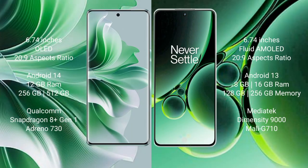Oppo Reno 11 Pro comes with a 6.74-inch OLED display with a 20:9 aspect ratio. OnePlus Nord 3 comes with a 6.74-inch flat AMOLED display and also a 20:9 aspect ratio.